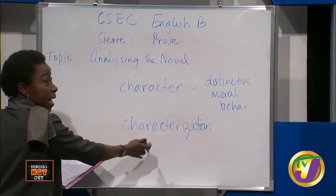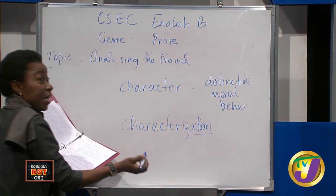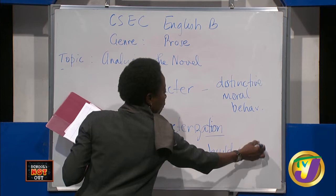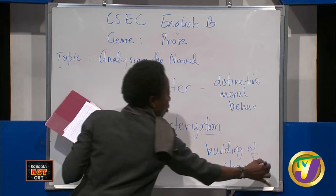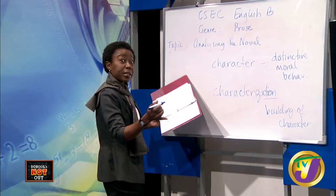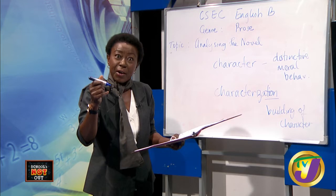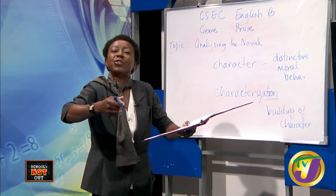When we are looking at characterization, this particular part is indicating a process — the building of character. Building of character means that, like constructing a building from foundation to roof, characterization means a process over time where a person can evolve into a different kind of moral state.